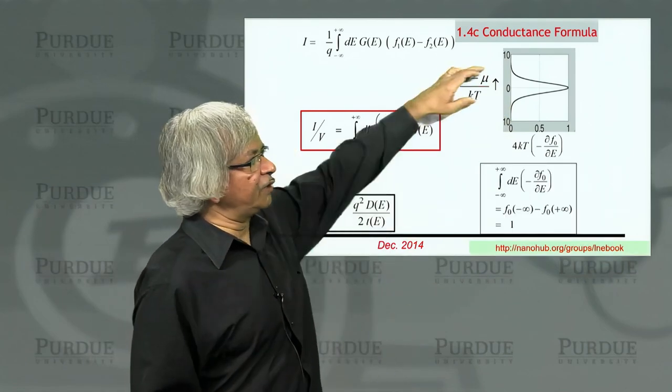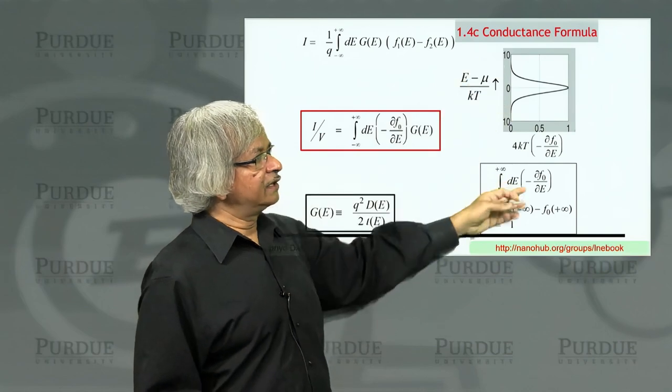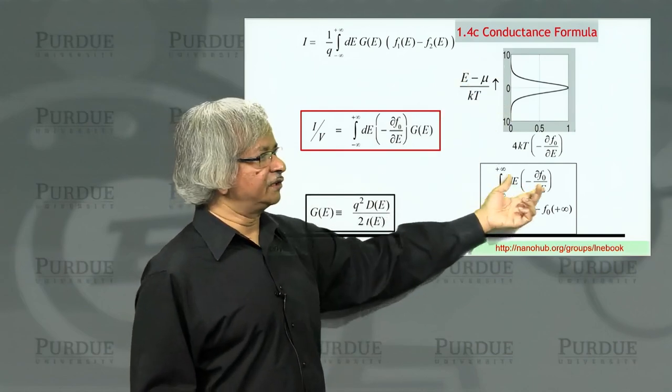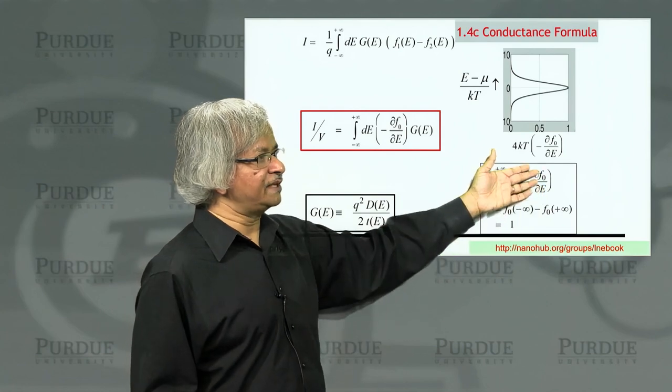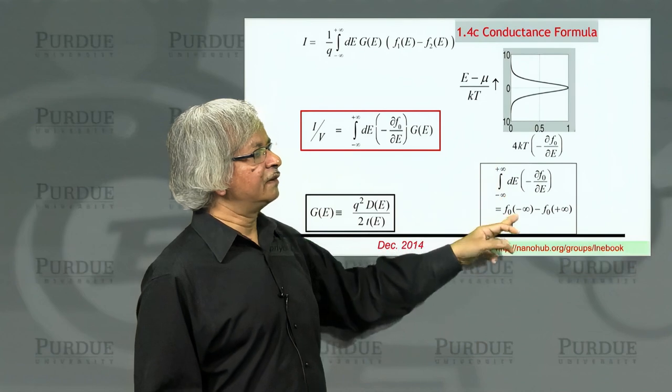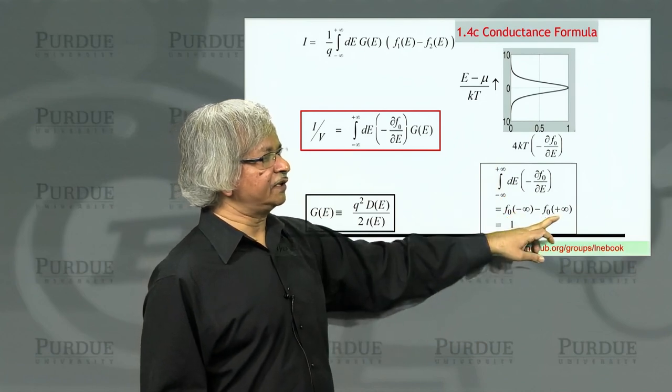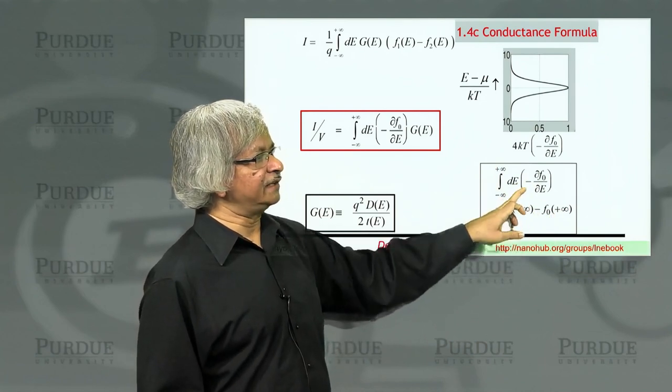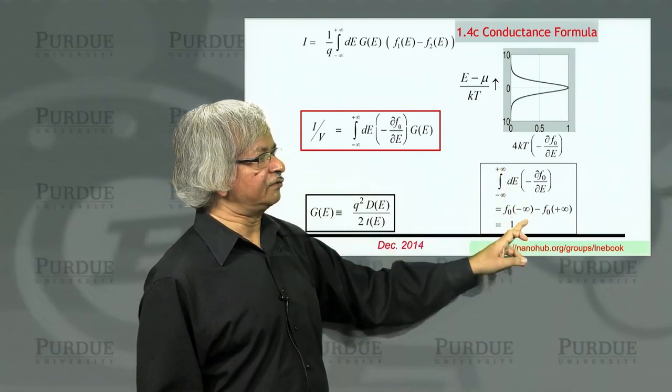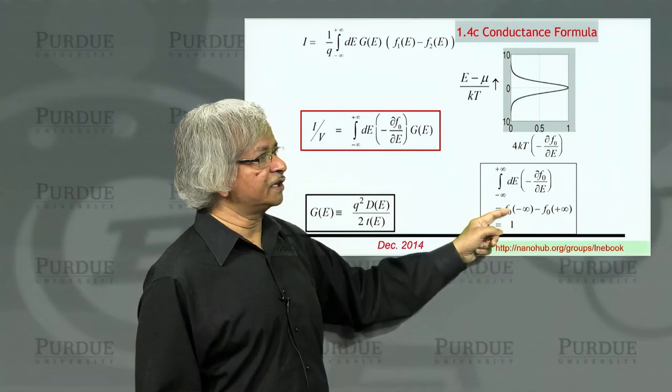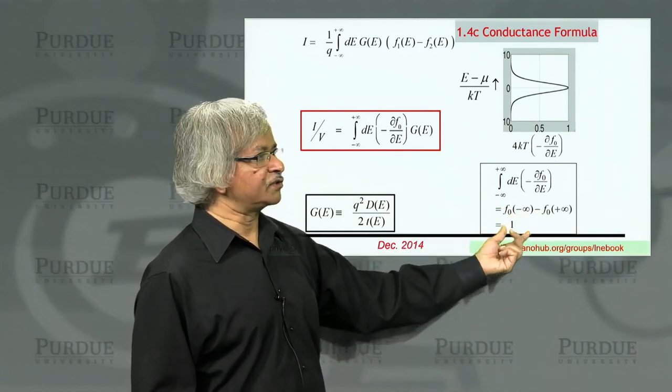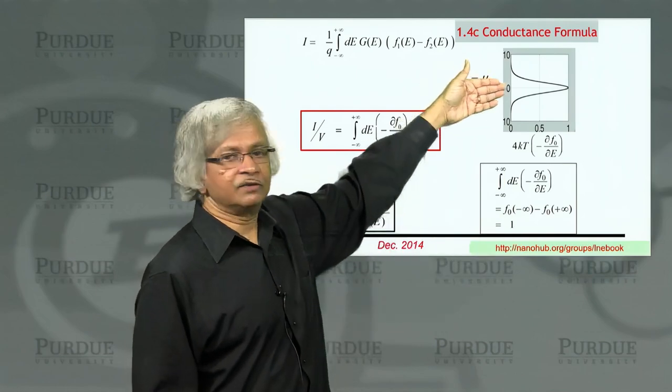So the area under this curve, the way you can show it's 1 is: take del F del E and integrate over energy. So this is a derivative you're integrating, so basically you get F zero, and you put in the two limits, minus infinity and plus infinity. There's a minus sign there, which is why I've reversed the order—I put the plus infinity over there and the minus infinity over here. And the Fermi function at minus infinity is 1, at plus infinity is 0, so that's 1. So the area under that curve is 1.